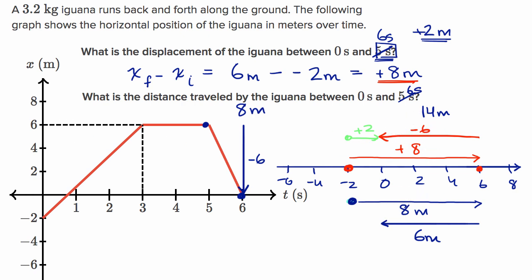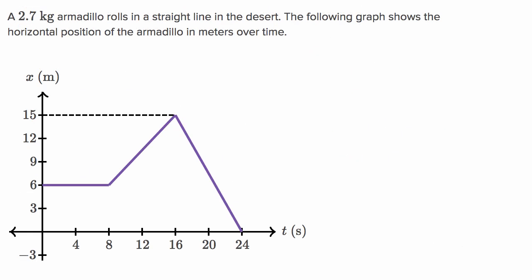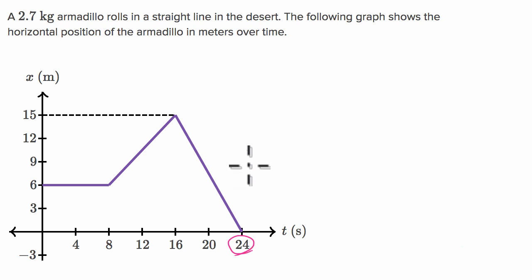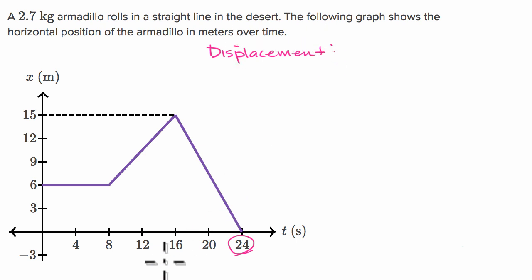Let's do one more example. A 2.7 kilogram armadillo rolls in a straight line in the desert. The following graph shows the horizontal position of the armadillo in meters over time. Over the first 24 seconds, let's think about what the displacement is and what the distance traveled is. Pause the video and see if you can figure out the displacement over the first 24 seconds.